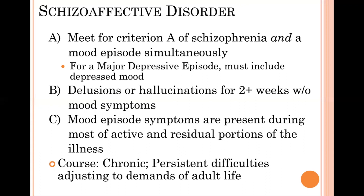So they first have psychosis and mood together, then psychosis without mood for a small period of time. But looking over the entire course of the disorder, you have to see that they've had mood episodes concurrent with psychosis for the majority of the time. Even though you've isolated two weeks without mood symptoms, overall what you see is both present for the majority of the disorder.